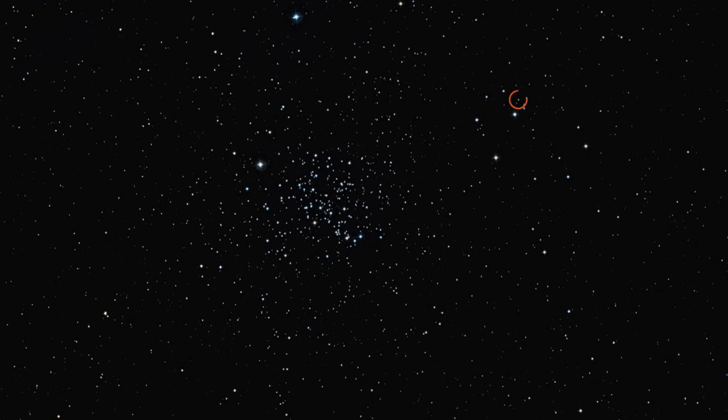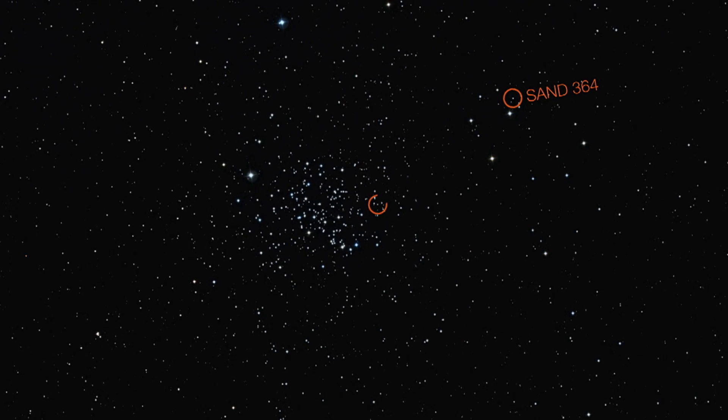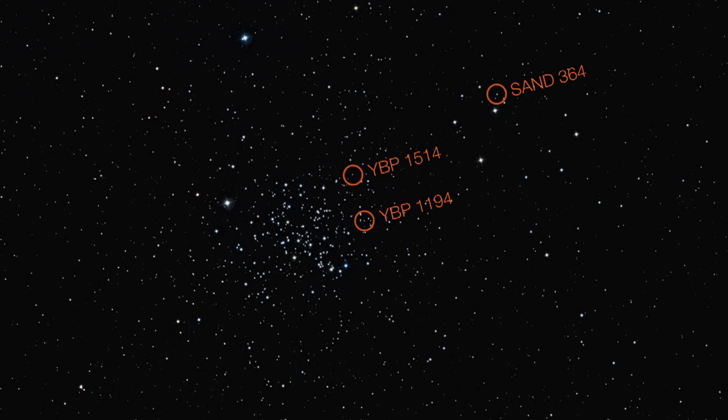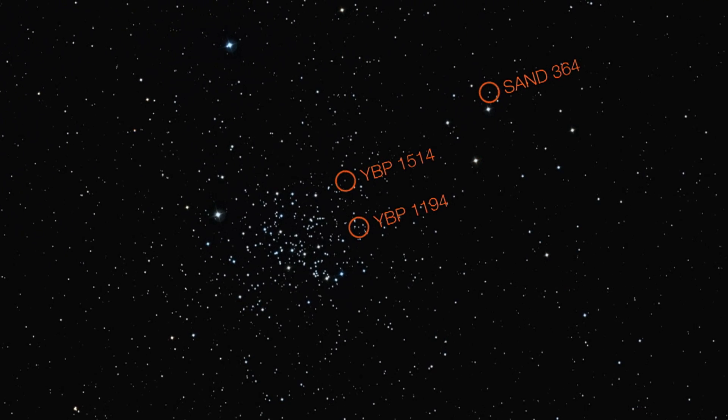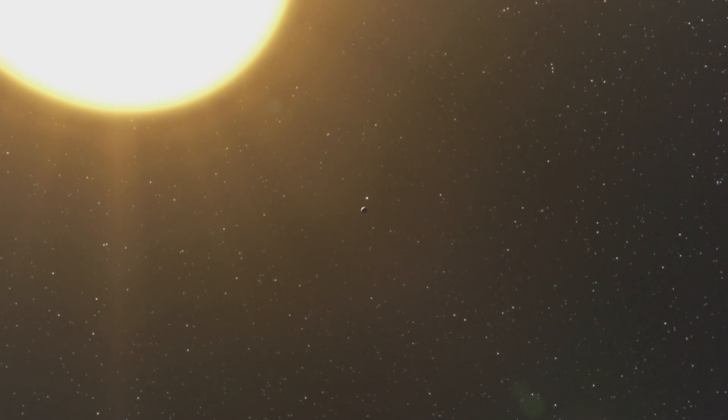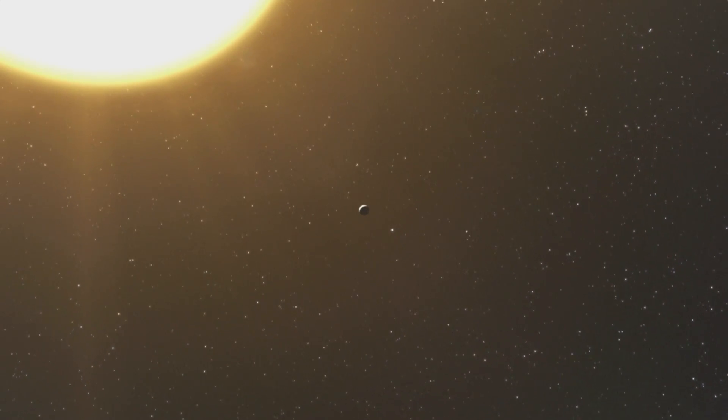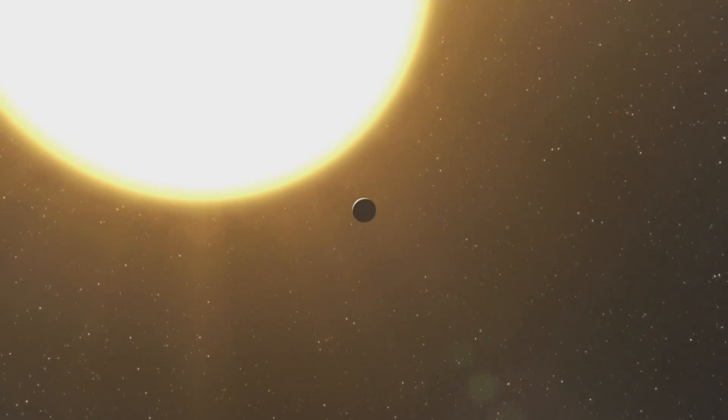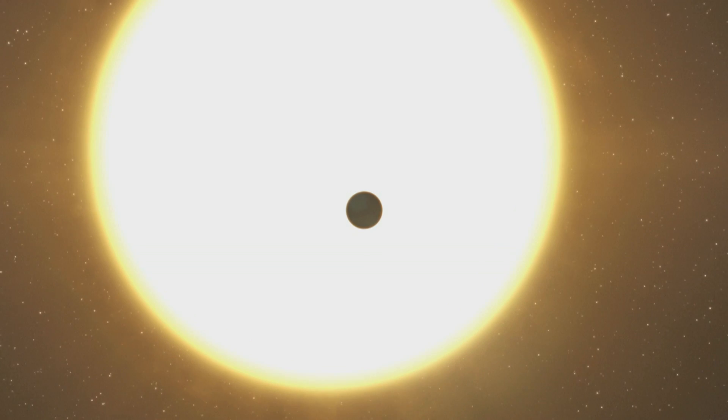Three planets were discovered in the cluster. Two of these planets orbit stars similar to the Sun, and one orbits a more massive and evolved red giant star. The first two planets both have about one-third the mass of Jupiter, and orbit their host stars in seven and five days respectively.